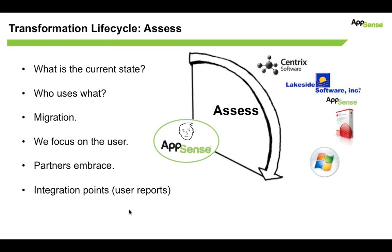Drilling into the assess element: it's really about getting your arms around what you have today. Before you figure out how you're going to change things, for many organizations the first step is just understanding how you do it today — what applications are in use, and what options you have for evolving how you deliver those desktops and applications. Partnerships with companies like Centrix and Lakeside allow you to deploy data collection software on your existing desktops, collect valuable usage information around what users are doing, what applications they're using, and what you need to consider going forward.